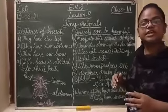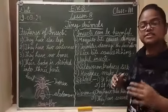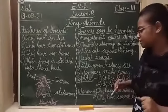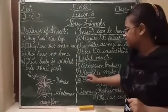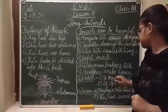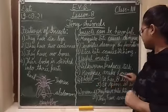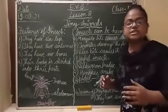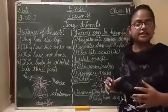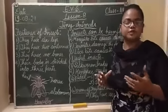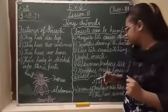Hame silk milti hai silkworm se, uske cocoon se. Second is honeybee — honeybees honey banaate hain from the nectar of flowers.